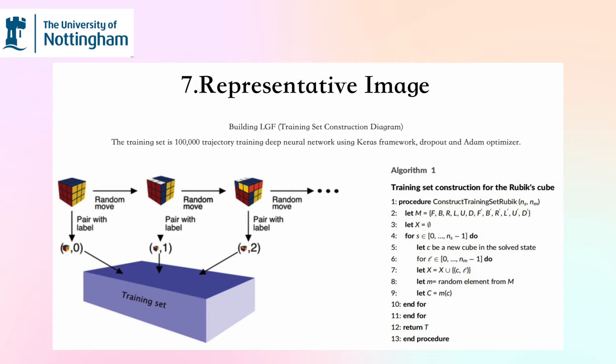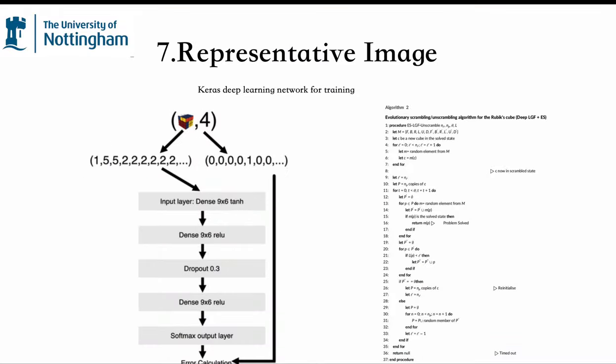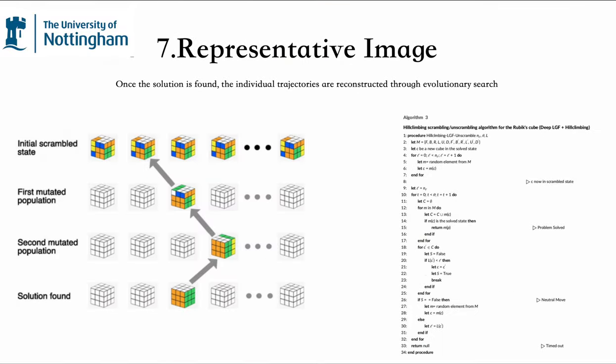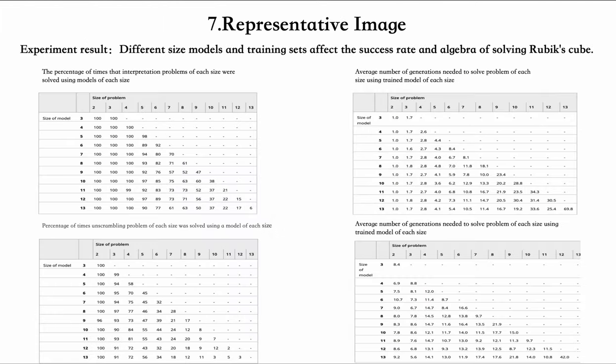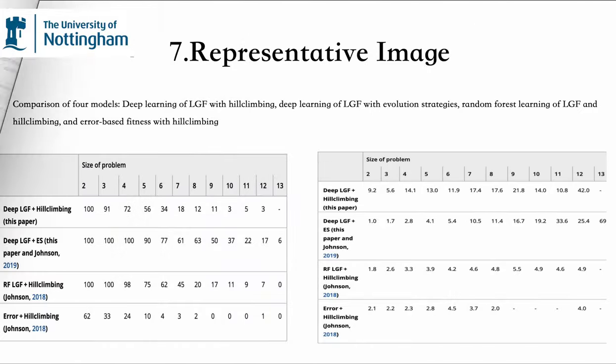Training the deep neural network uses the Keras framework with Dropout and the Adam optimizer. The individual trajectories are reconstructed through evolutionary search. You can see the experiment results and comparison of formulas.